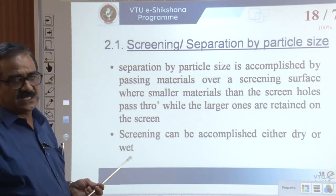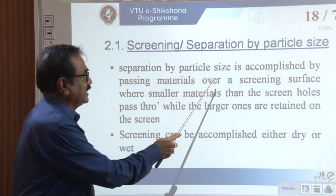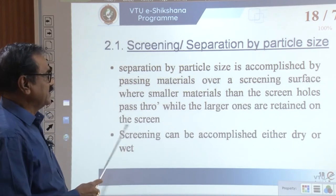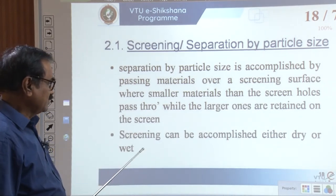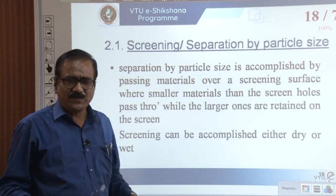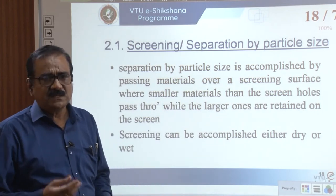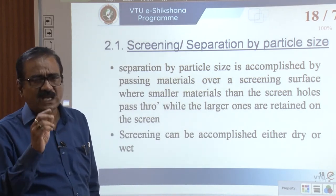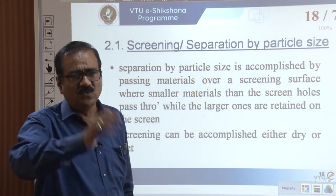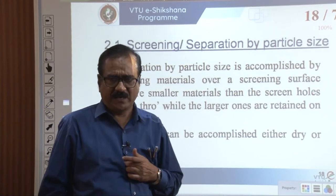Separation of particle size is accomplished by passing materials over a screening surface, where small materials smaller than the screen holes pass through, while the larger ones are retained. Very simple screening — depending upon the size of the hole, when solid waste is passed through, all materials having a smaller size than the screen hole will pass through and bigger size material will move forward. It can be dry screening or even wet screening.